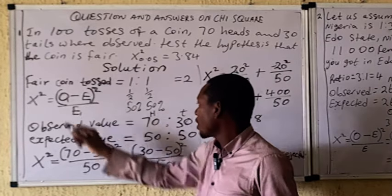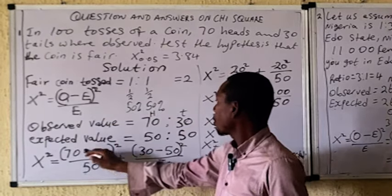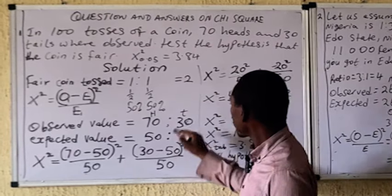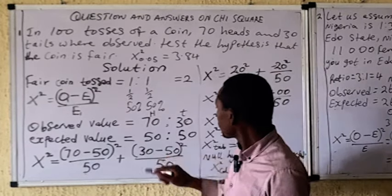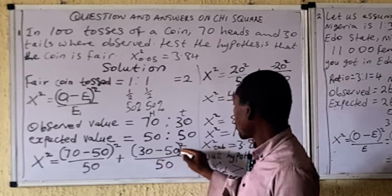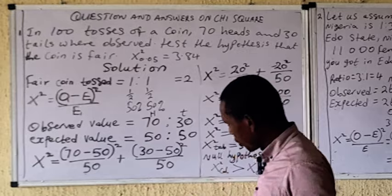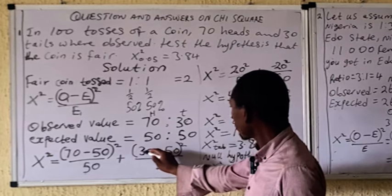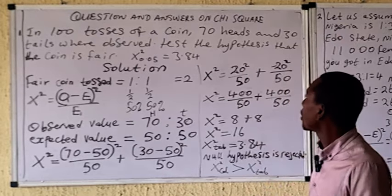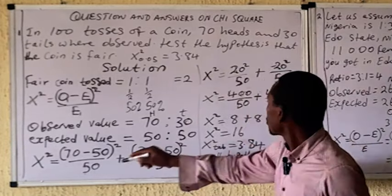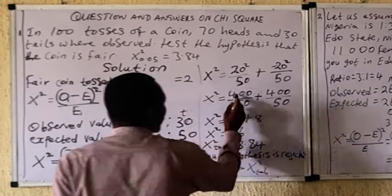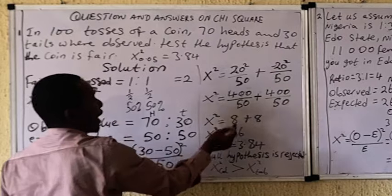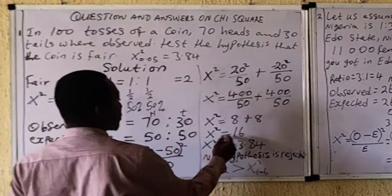Now applying the chi-square formula: (70 minus 50) squared over 50, plus (30 minus 50) squared over 50. Subtracting gives 20 and minus 20 respectively. Squaring both gives 400 each. Dividing: 400/50 = 8 and 400/50 = 8. Adding together gives a calculated chi-square value of 16.